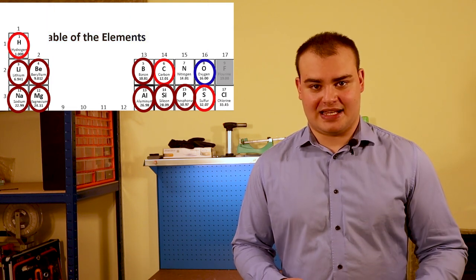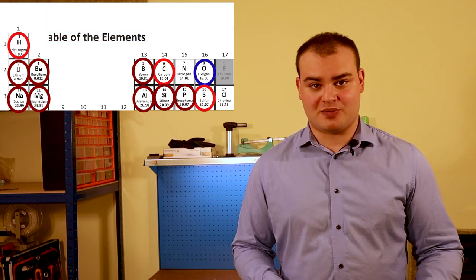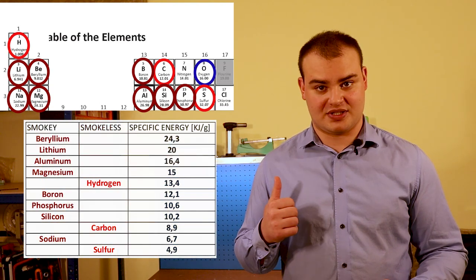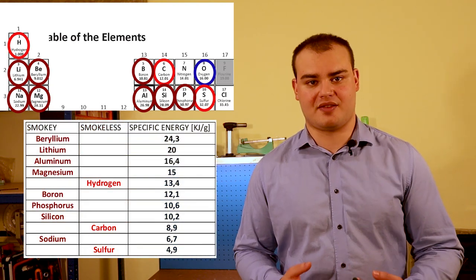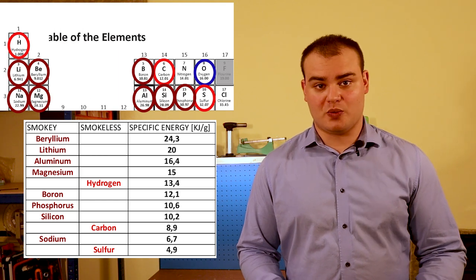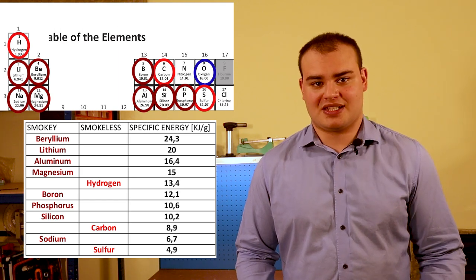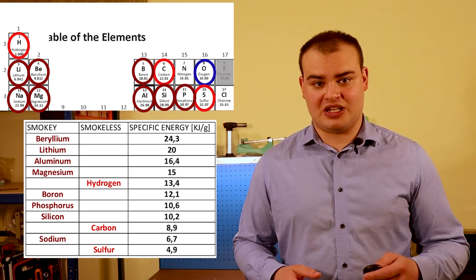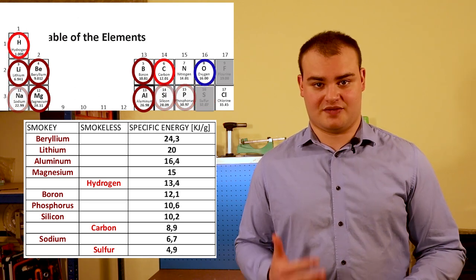Anyway, to put the remaining elements head to head, I will display the energy they release when mixed with oxygen for one gram of mixture in these two tables. One for smoky fuels, the other for smokeless. In each one we can get rid of the least energetic fuels, since there is no practical benefit in using those either. Let's therefore get rid of sulfur, sodium, silicon and phosphorus.